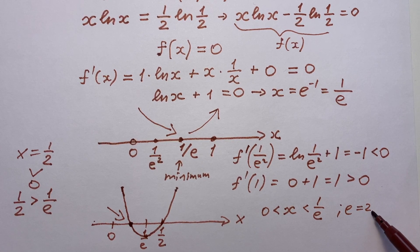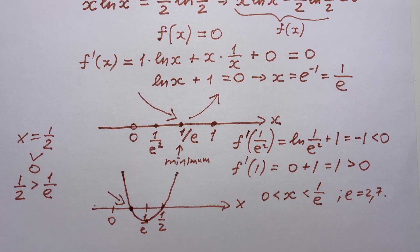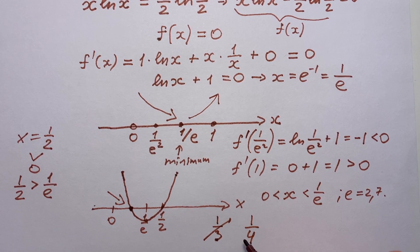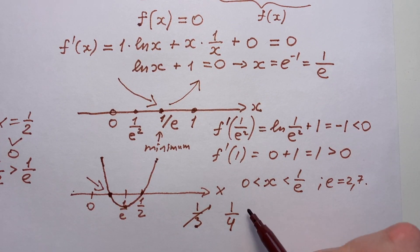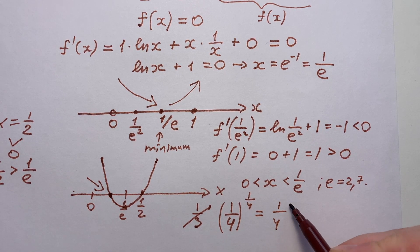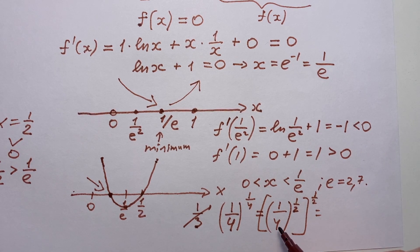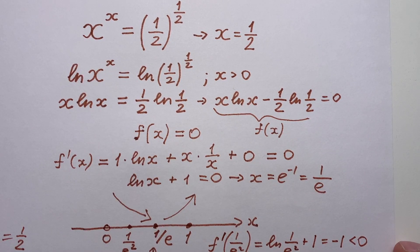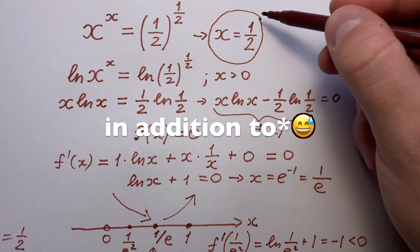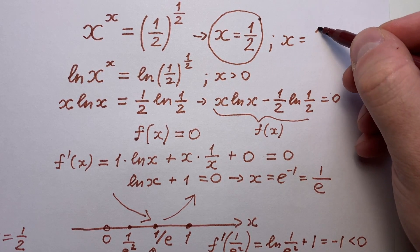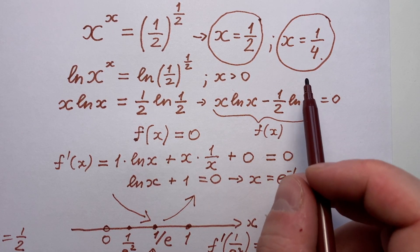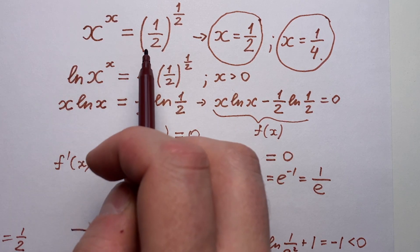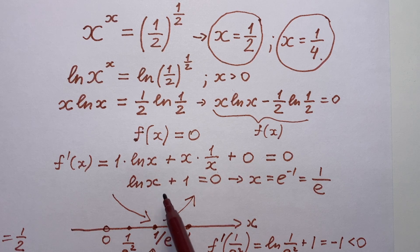Since e equals approximately 2.7, it's not very hard to find the second solution. Let's try one divided by three — that's not it. How about one divided by four? This works very well, because one quarter to the power of one quarter equals one quarter to the power of one half, and then again to the power of one half. Under the bracket is one half, raised to the power of one half. The solution x equals one quarter suits the equation perfectly. So in addition to x equals one half, we have another solution: x equals one quarter. Could you notice the second answer from the start? I hope you enjoyed this solution and have a great day!